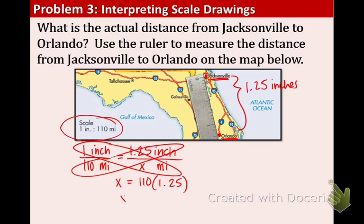And when you do so, you get x equals 137.5 measured in miles. So, that is the actual distance from Jacksonville to Orlando.